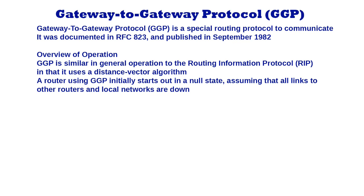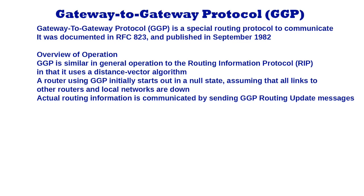The router sending the echo messages considers the neighbor up if it receives back replies to a certain percentage of messages — by default 50%. Actual routing information is communicated by sending GGP routing update messages, which are similar in nature to RIP response messages. Each routing update message contains the information in the sending router's routing table, which specifies which networks the router can reach and at what cost in terms of hops for each.